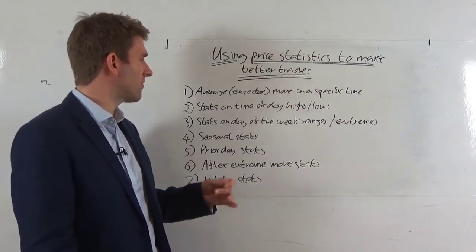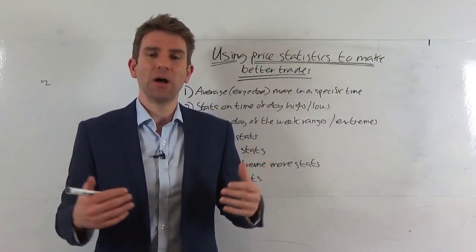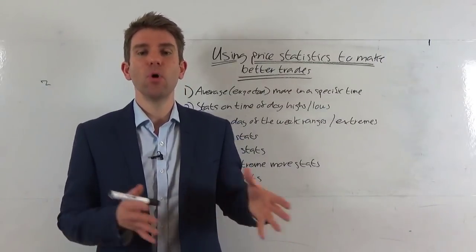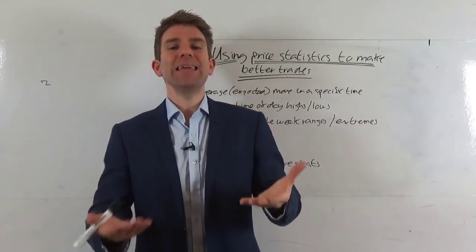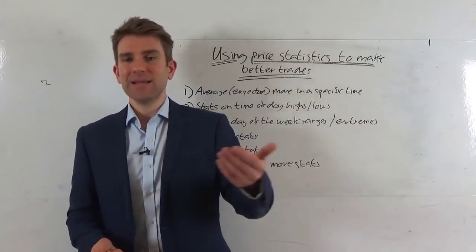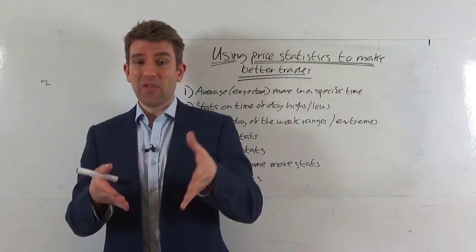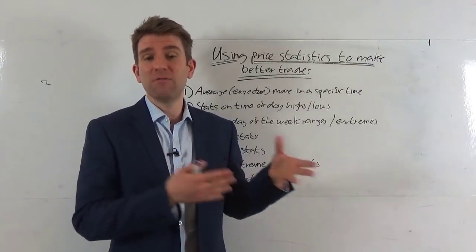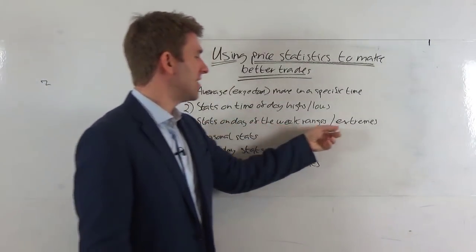Number two: stats on the time of day highs and lows. You can find stats online that say, for example, the euro forms a new high 70% of the time at lunchtime, or the new high or low for the day is most likely formed in the first hour of European trade on EUR/USD. You can then say there's no point looking for a fresh low when we look reasonably bullish and we've already done the low in the morning. Or, if you're in a trade and everything lines up statistically suggesting that's the low of the day, you can confidently hold on and put your stop under there.